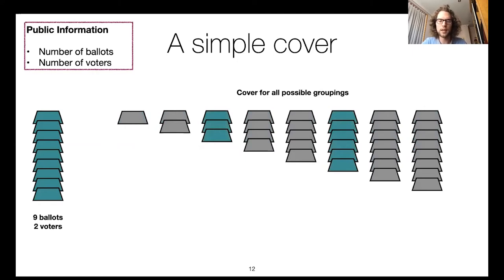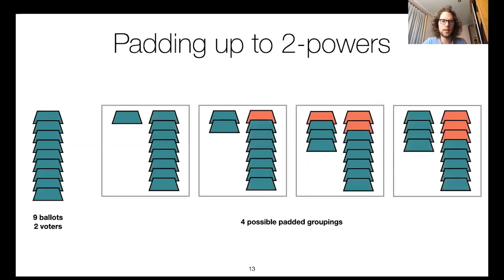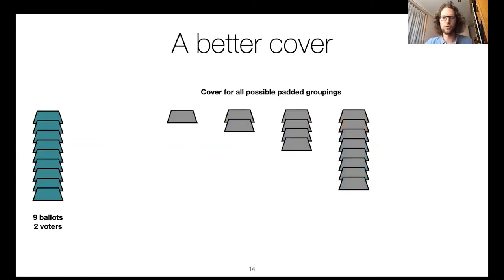The problem with that naive approach is that we needed to add a large number of dummies. We can do much better by also adding dummy ballots to existing groups of real voters, padding each group up to a power of two. As a result, the only occurring group sizes are one, two, four, and eight, and none of these occurs more than once in each of the four situations. Therefore we can use a much smaller cover of groups of sizes one, two, four, and eight. For the example grouping of three and six ballots: we add one dummy to the group of three, two dummies to the group of six, and then two more dummy voters — one with one dummy ballot and the other with two dummy ballots.